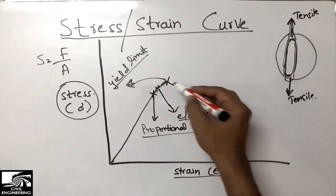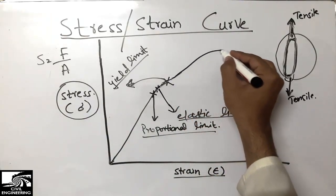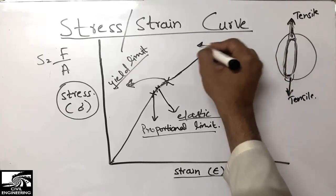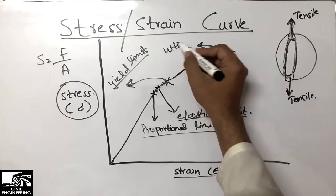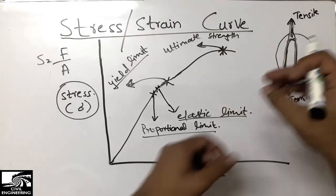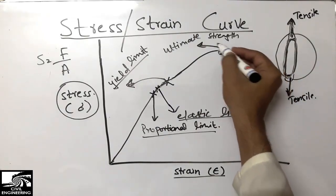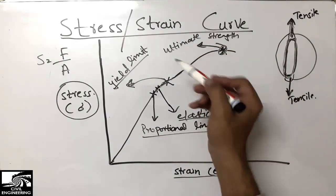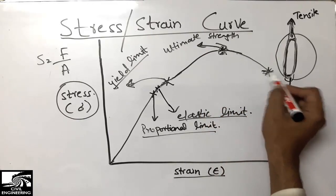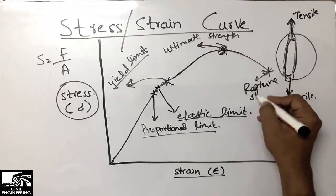After the yield limit, as the Universal Testing Machine continues increasing the load, the bar goes through a plastic range and reaches its maximum load-carrying capacity — we call this the ultimate strength. This is the ultimate strength of the steel bar, the maximum it can take. After this, the load drops and the bar breaks — we call that final breaking point the rupture strength of the steel bar.